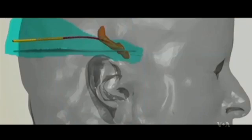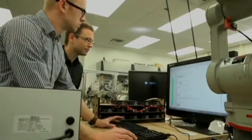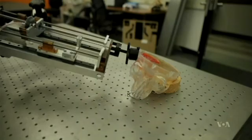The tubes will navigate around delicate brain matter, not through it. The researchers are trying to design tools that could attach to the robot, such as a tiny grasper that could break up a clot before suctioning it out.